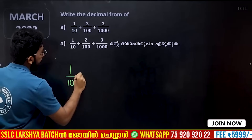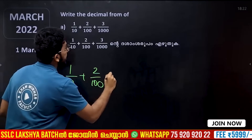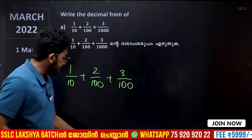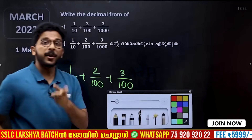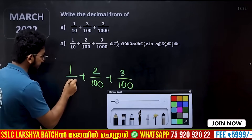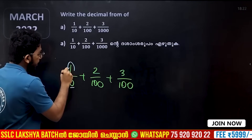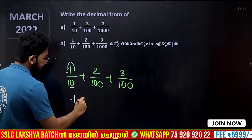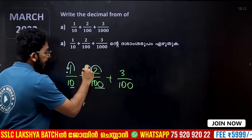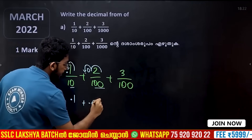Let's take a simple example: 1 by 10 plus 2 by 100. This is the previous year example. It's very simple. Let's take a simple example of decimal points and decimal places. Here we have 1 chart, that means 0.1, plus here we have 2 chart, that means 0.02.